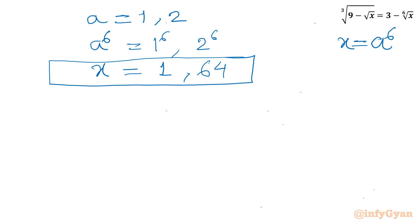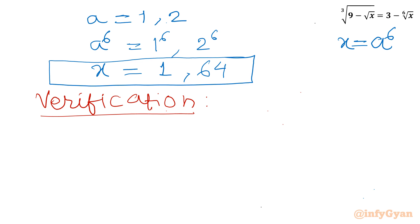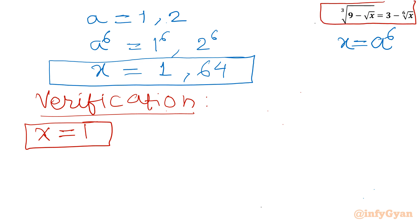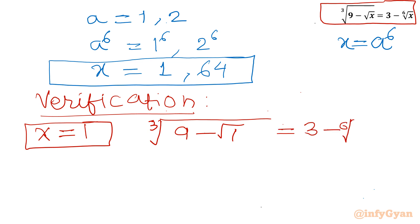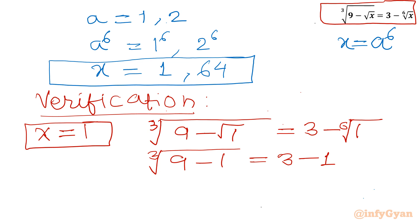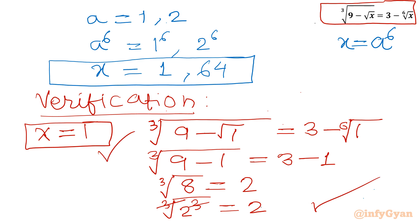Let us verify. Applying x equal to 1: LHS is cube root of (9 minus square root 1) equals cube root of (9 minus 1) equals cube root of 8 equals 2. RHS is 3 minus 6th root of 1 equals 3 minus 1 equals 2. LHS equals RHS, hence verified. So x equal to 1 is a true solution.